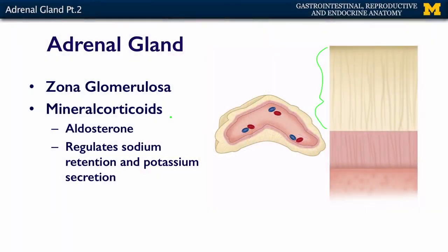Aldosterone is secreted and it acts on the kidney. It encourages the retention of sodium by the kidney, and it also encourages secretion of potassium. So it helps you keep your sodium, get rid of your potassium, and that is one of the mechanisms by which the kidney helps you maintain your fluid balance.